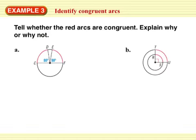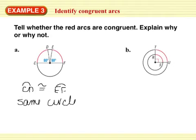Identify congruent arcs. Tell whether the red arcs are congruent. Explain why or why not. In A, I have arc CD. It's congruent to arc EF because they are in the same circle. And the measure of arc CD is equal to the measure of arc EF. Those are my two reasons.